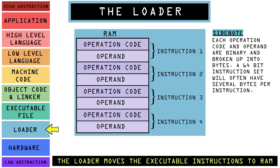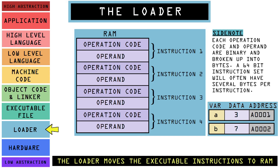The job of the loader is to prepare the executable file by loading it into memory called RAM. This includes allocating memory space for data and instructions. In the diagram, notice each instruction is made up of the opcode followed by the operands in the next slot below. The loader will allocate data memory in RAM for variables such as our A and B variables that we are swapping. Once the executable file is loaded, it is up to the CPU and hardware to make it all happen.